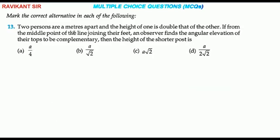Two persons are a meter apart and the height of one is double that of the other. If from the middle point of the line joining their feet, an observer finds the angular elevation of their tops to be complementary, then the height of the shorter post is...